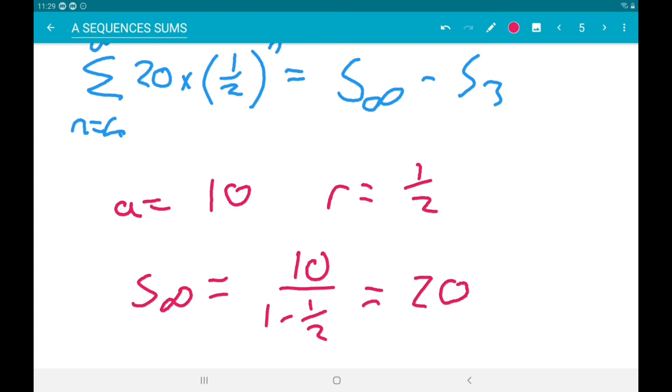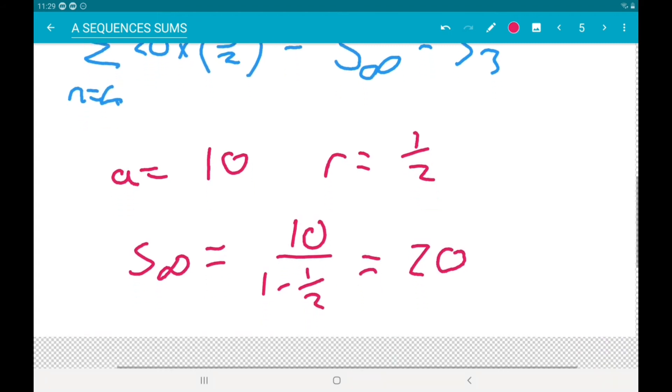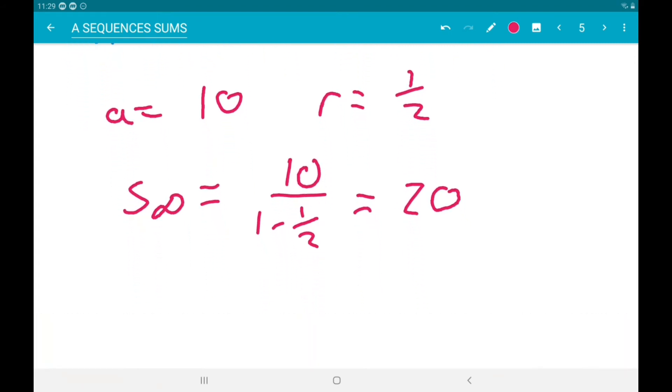Now the sum to 3 is easy enough to work out, that's just 10 plus 5 plus 2.5. So the sum to 3 is 17.5.